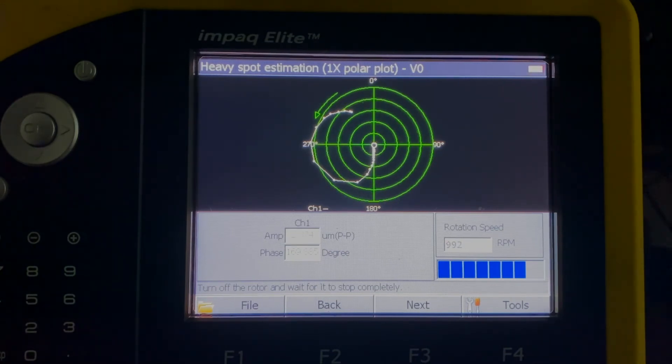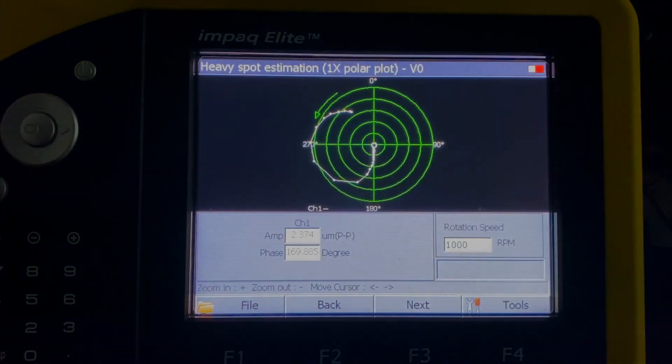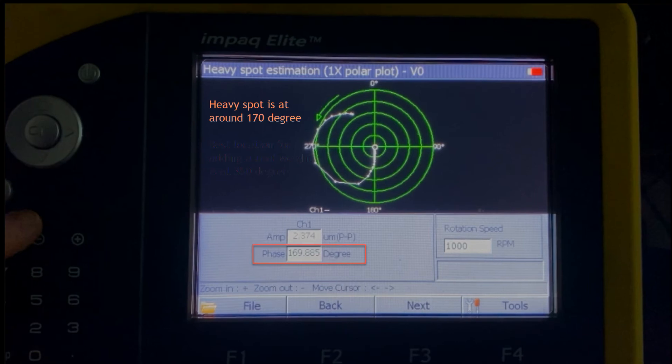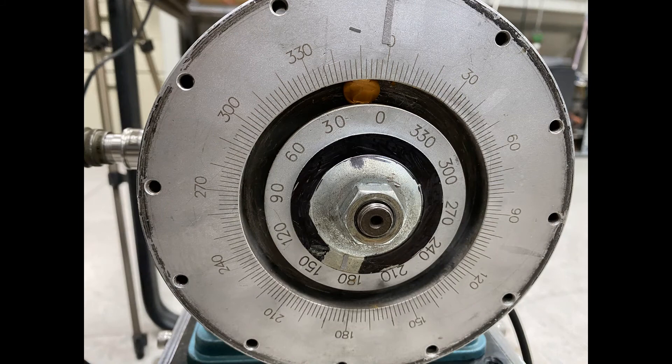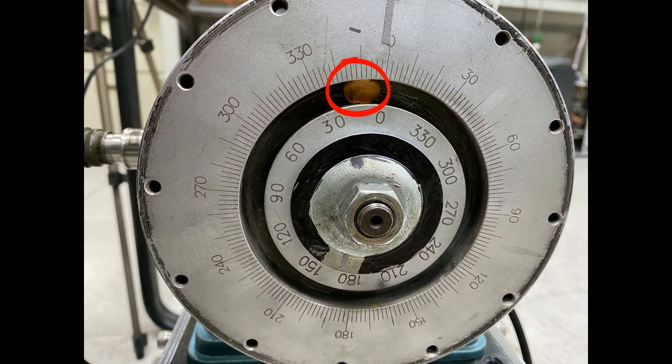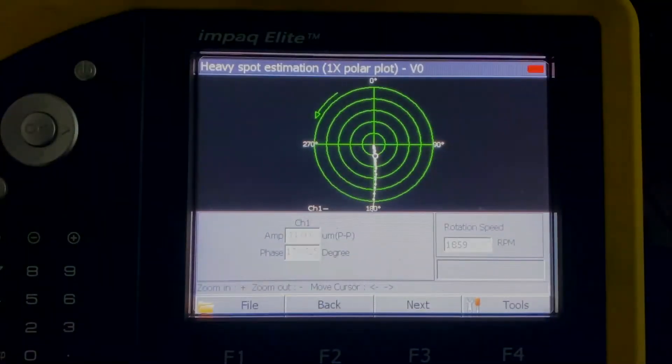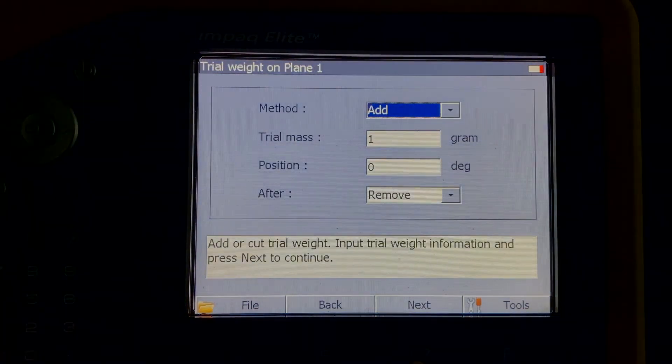As we add the trial weight, the ideal position would be to place the trial weight at the opposite side, or 350 degrees. According to the heavy spot estimation, we will add a trial weight of 1 gram to the rotating disc at 350 degrees. Then we will input the data of the trial weight information in the menu.